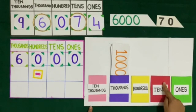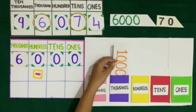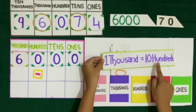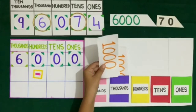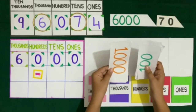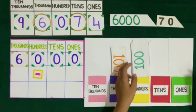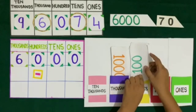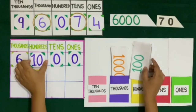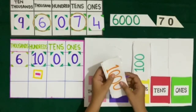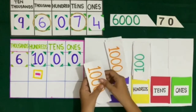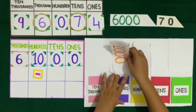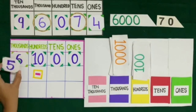Here we have no note of rupees 10 or 100, so we will get change of 1000. We know that 1000 is equal to 10 hundreds, so we will change 1 note of rupees 1000 with 10 notes of rupees 100. So here we have 10 notes of rupees 100, which means 10 at 100's place. And we have 1000, 2000, 3000, 4000, 5000 — so 5 at 1000's place.